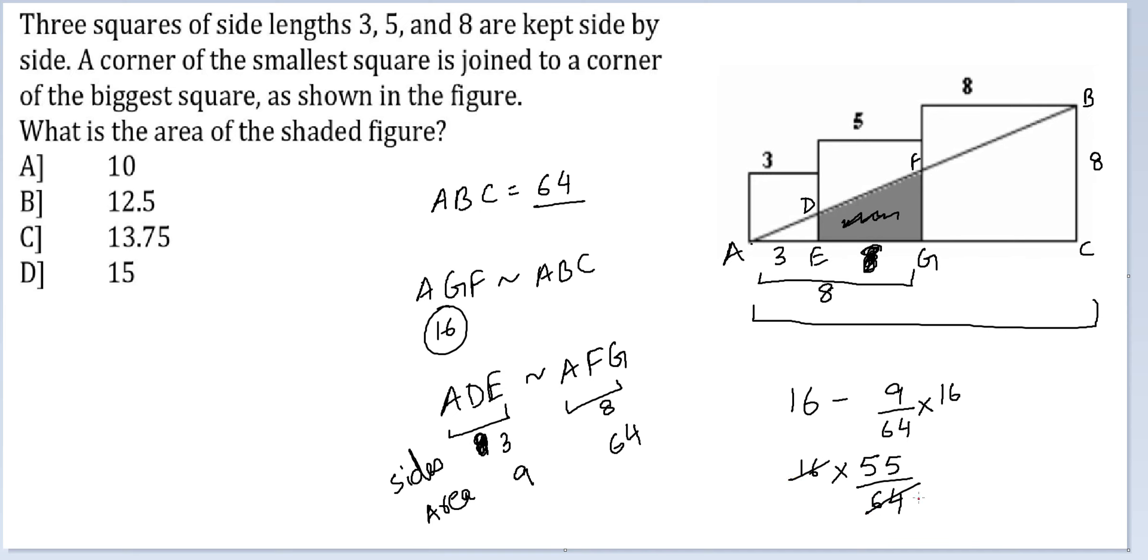Cancel this, cancel this, by 4. 55 by 4 is 13.75, right? So my answer to this question is option C, 13.75.